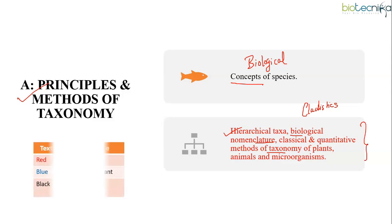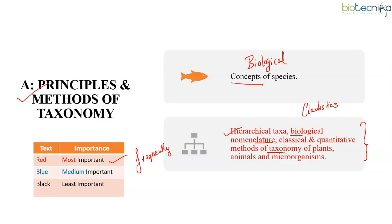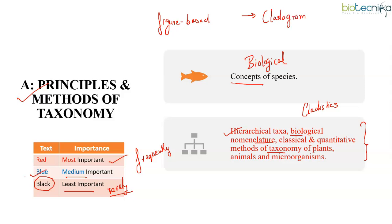Topics written in red text are very important from an exam point of view — these are topics from where questions are frequently asked. Topics in blue text are of medium importance; questions can sometimes be asked from these. Topics in black text are of least importance and questions are rarely asked from them. From Subunit A, questions are mainly statement-based or figure-based. Figure-based questions are mainly asked on cladograms where you need to identify monophyletic, paraphyletic, or polyphyletic groups. Questions can also be asked on plesiomorphic or apomorphic characters. Statement-based questions on hierarchical sequence for classifying living organisms can also be asked, where you are given a sequence and must find the correct order.